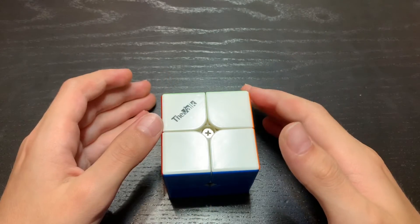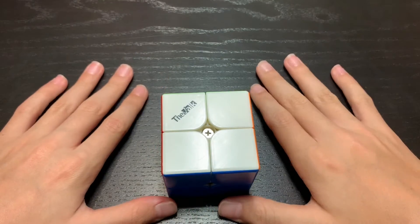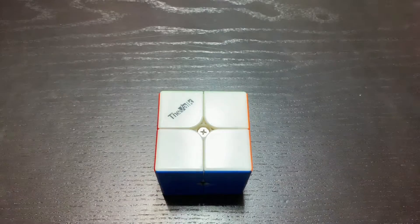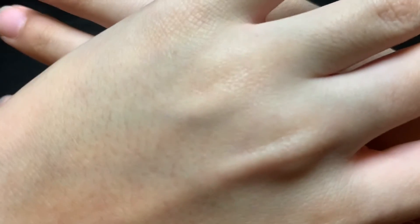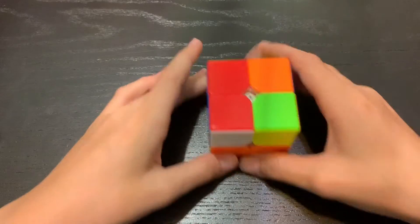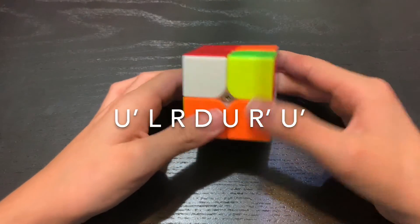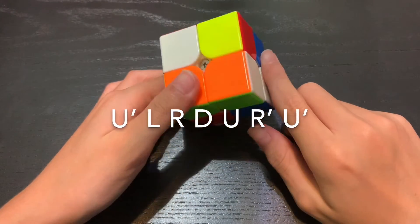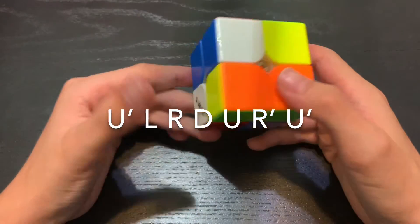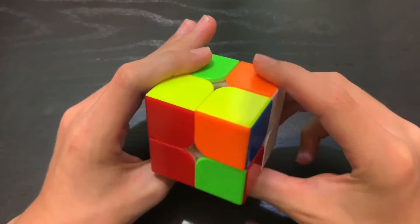Now that you know how to solve it, I will walk you through an example solve. Here we go. So I have done the scramble that is being shown on the screen with white top and green front. So your cube should look the same as mine.